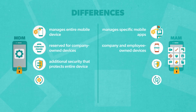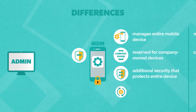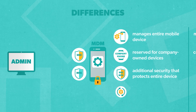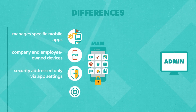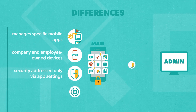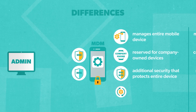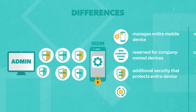Number three: MDM offers additional security features such as single sign-on and multi-factor authentication that protect the entire device and its applications. With MAM, admins can only address security via application settings, which requires pre-configuring corporate apps and pushing configurations out to personal devices via MAM software. It's worth mentioning that MDM policies also support common IT compliance regulations and standards like GDPR, CCPA, SOC2, and HIPAA, while MAM doesn't have built-in compliance capabilities.